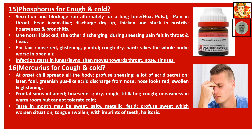Mercurius for cough and cold: at onset, chill spreads all over the body. Profuse sneezing. A lot of acrid secretion. Later, foul greenish pus-like acrid discharge from the nose. Nose looks red, swollen and glistening. Frontal sinus inflamed. Hoarseness. Dry cough. Rough, titillating cough. Uneasiness in a warm room but cannot tolerate cold. Taste in mouth may be sweet, salty, or bitterly foul. Profuse sweat which worsens the situation. Tongue swollen with imprints of teeth. Halitosis — meaning bad breath. The last symptom is the general symptom of Mercurius.